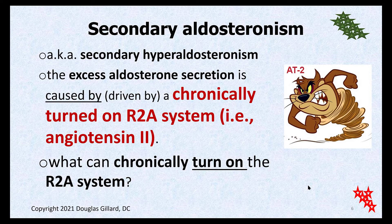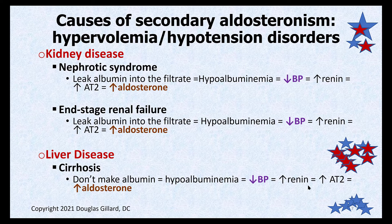In secondary aldosteronism, the result is the same — over-secretion of aldosterone — but the cause is different. There is nothing wrong with the adrenal gland. The problem is an overactive, chronically turned-on RAAS system, which ultimately produces angiotensin II. Angiotensin II is a monster: when it's chronically turned on it causes blood clotting, hypertension, and damages the heart. When you're bleeding and blood pressure drops it's life-saving, but chronic activation has serious negative effects.